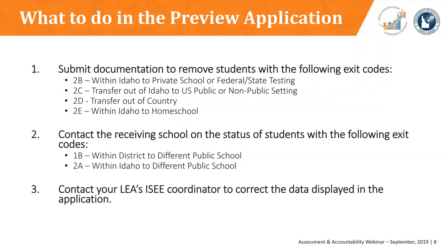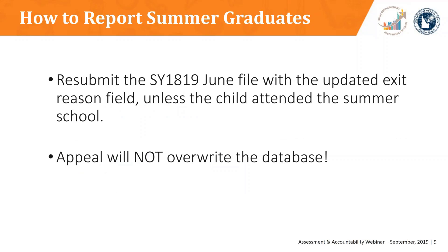You can submit supporting documentation for transfer students. Exit codes are listed in the screen. If you have any questions regarding kids that transfer in-state, you should contact the IC coordinator. If you don't have a summer IC file, you should resubmit the school year 18-19 June file to update the exit code for those kids who graduated during the summer. The appeal will not overwrite the data in the database, so any kids who do not have a graduate code will be listed as non-graduate. Make sure that you upload the corrected June file.